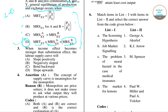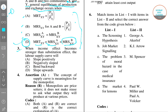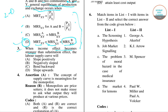In today's lecture we are solving microeconomics questions from UGC NET 2014 Paper 2, June exam. Question number three asks: when the income effect becomes stronger than the substitution effect, the labor supply curve will be — four options are given.